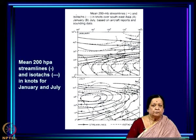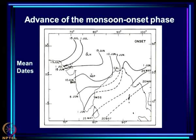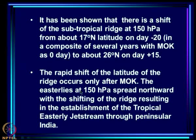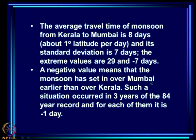The onset over Mumbai is around 10th June, while the onset over Kerala is around 1st June. After the onset over Kerala the monsoon travels northward and by 10th June the onset occurs in Mumbai - this is the mean picture. The average travel time of monsoon from Kerala to Mumbai is 8 days, which is about 1 degree latitude per day - the same as the average northward movement of the cloud bands we observed.